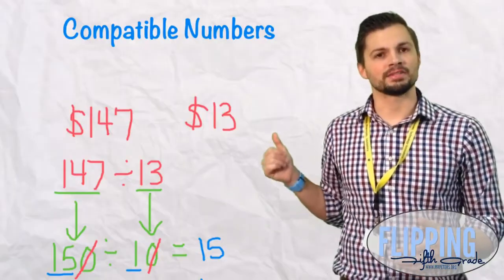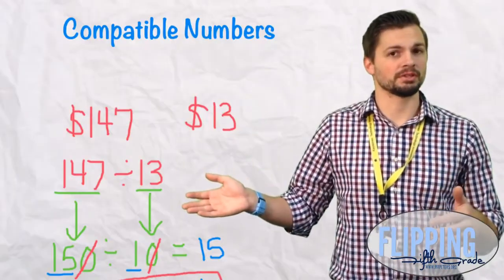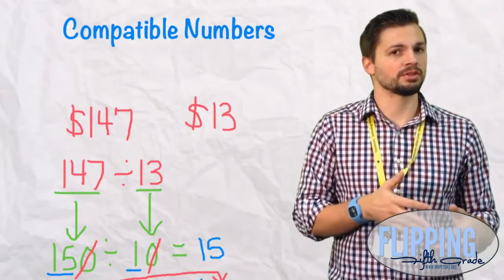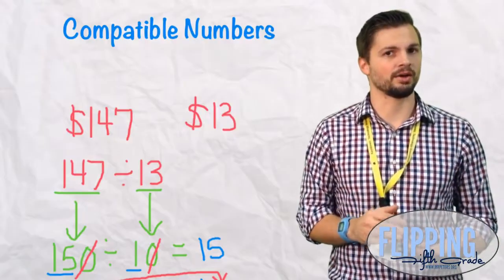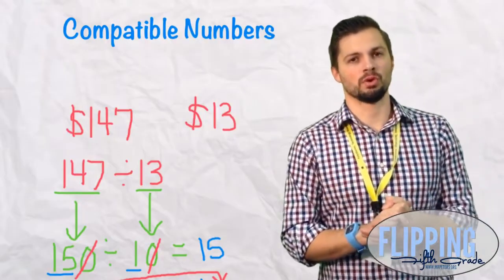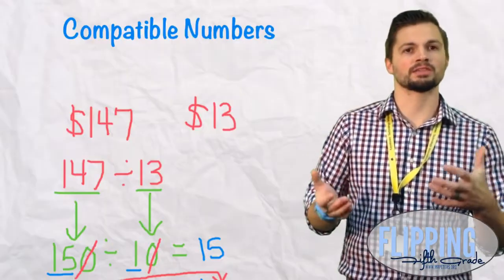Now we need to add that zero because there is no zero in the divisor, but there is a zero in the dividend. So they don't cancel each other out. We bring that zero over to the quotient. So the answer is 10.